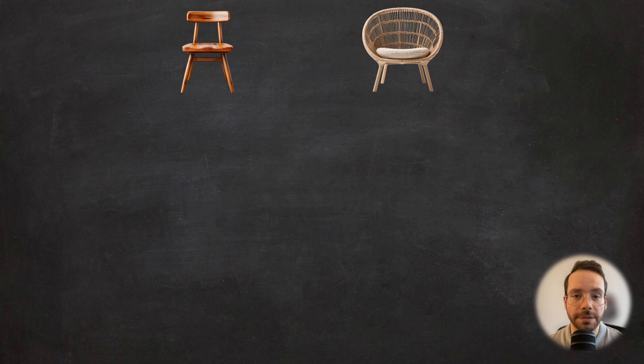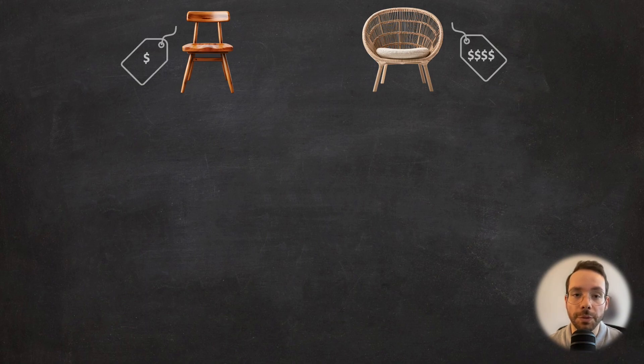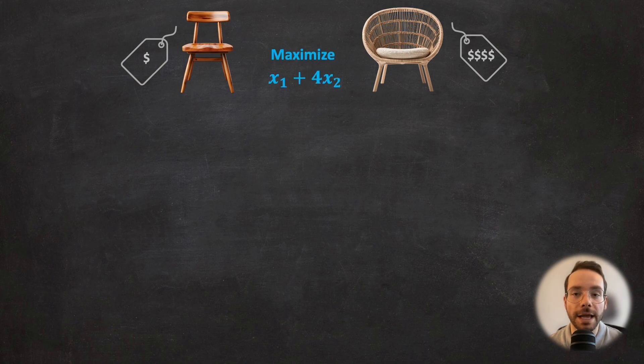Let's get started with an example. Imagine you're in the business of crafting chairs, specifically two types: indoor chairs and patio chairs. What makes this interesting is that the profit you can make from the patio chair is four times higher than the indoor chair. So putting this together, the profit of the business that we should be maximizing can be formulated as x1 plus 4x2.